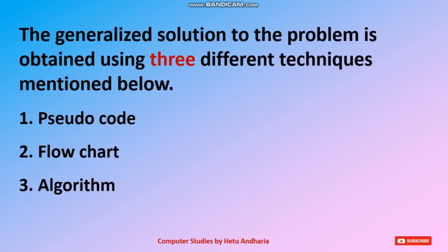The generalized solution to a problem can be obtained using three different techniques. The first is pseudocode — what I just did, writing the solution step by step, is known as pseudocode. The second is graphical representation, that is a flowchart, which I will teach you later. The third technique is an algorithm, which you also have to write.